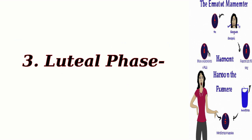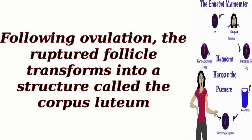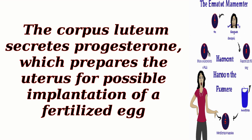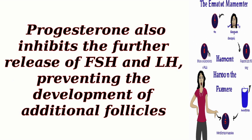3. Luteal phase. Following ovulation, the ruptured follicle transforms into a structure called the corpus luteum. The corpus luteum secretes progesterone, which prepares the uterus for possible implantation of a fertilized egg. Progesterone also inhibits the further release of FSH and LH, preventing the development of additional follicles.